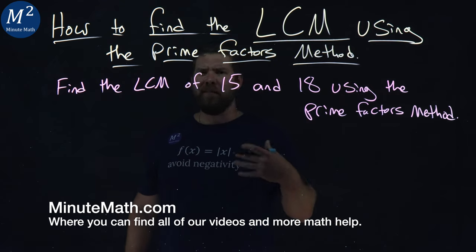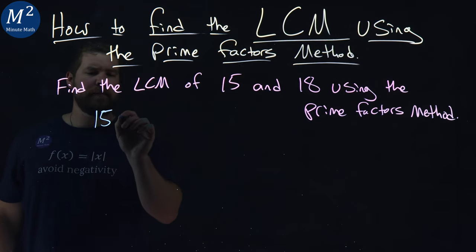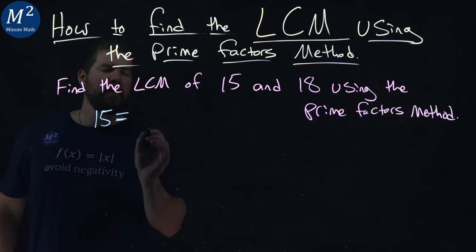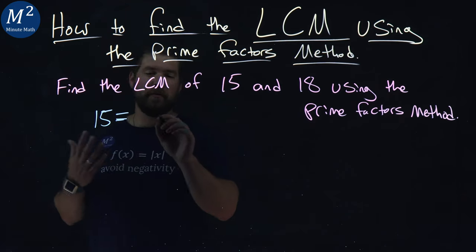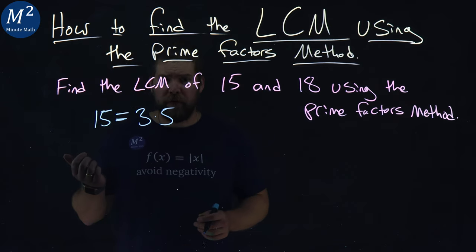First, we want to find the prime factors of each one of these numbers. 15 is first. The prime factors of 15 is equal to 3 times 5. The two prime numbers that multiply to be 15.